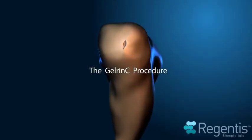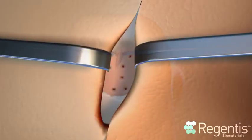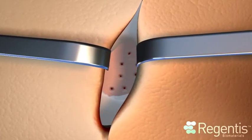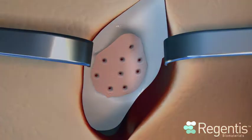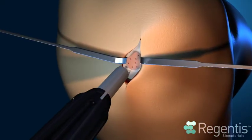The Gelrin-C procedure. Following standard microfracture, the stellate accessory is inserted through a small incision into the joint.